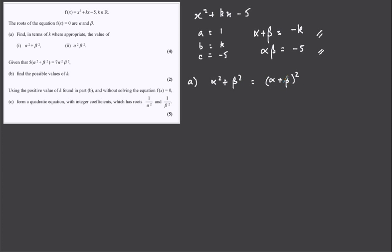which almost works. If we multiply out this bracket, we get the alpha squared, we get the beta squared, but we get a 2 alpha beta that we don't want, so we simply take it off. Once we do that, these two things are an identity, they are the same, and we can slot our values in.